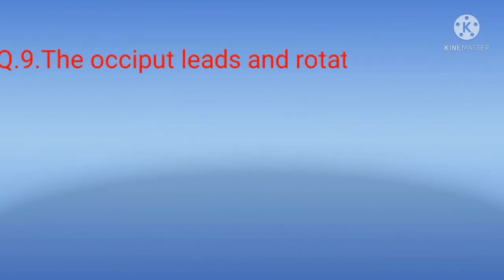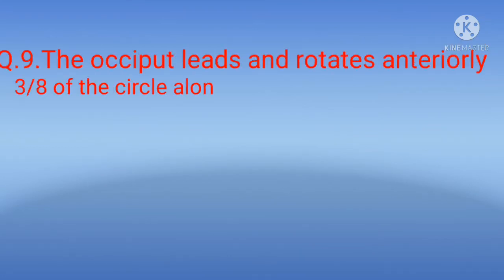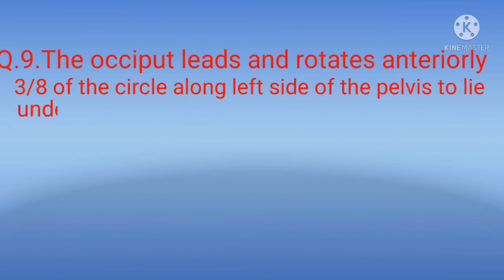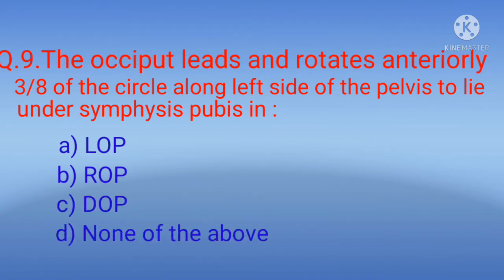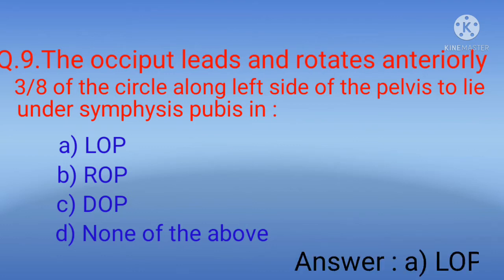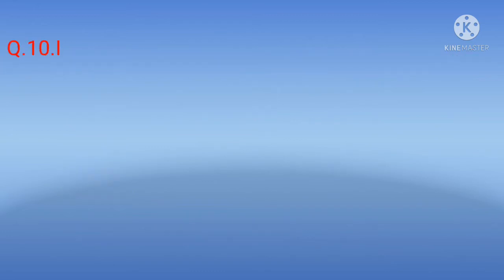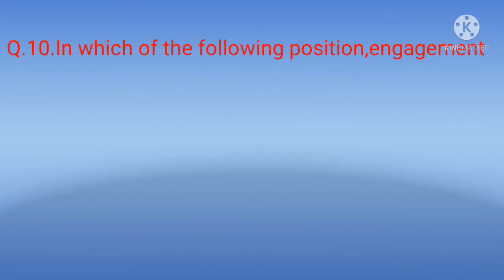Question 9: The occiput leads and rotates anteriorly three-eighths of the circle along the left side of the pelvis to lie under the symphysis pubis in — options: A) LOP, B) ROP, C) DOP, D) none of the above. The correct option is A) LOP — left occiput posterior.